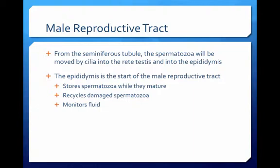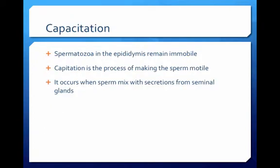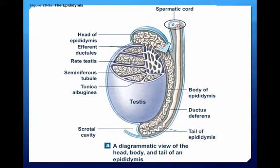The epididymis is the start of the male reproductive tract and is a coiled tube almost 23 feet long. It is bound to the posterior border of the testis and has a head, a body, and a tail. The epididymis is the location where the spermatozoa will be stored and protected while they mature. The epididymis will also recycle damaged spermatozoa and will monitor the fluid produced by the seminiferous tubules. The spermatozoa will mature in the epididymis but will remain immobile. In order for the spermatozoa to become motile, that is to be able to actively swim, the spermatozoa must undergo capacitation. Spermatozoa become motile when they are mixed with secretions from the seminal glands. Once they mature, they will move into the ductus deferens where they will be kept until emission.